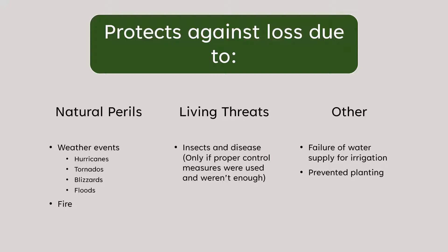MPCI also covers the failure of water supply for irrigation, which is important in certain areas of the country, as well as prevented planting caused by a weather event or natural disaster.